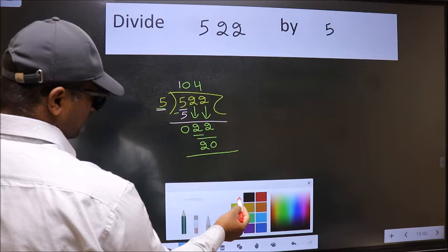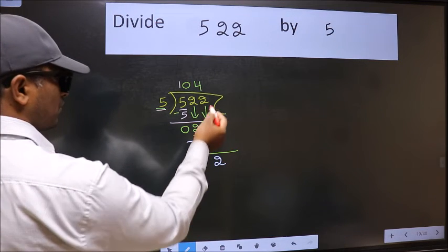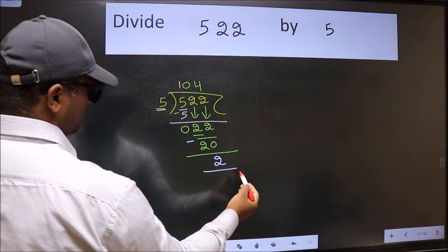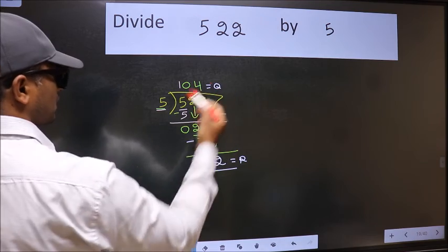Now, we should subtract. We get 2. No more numbers to bring it down. So, we stop here. This is our remainder and this is our quotient.